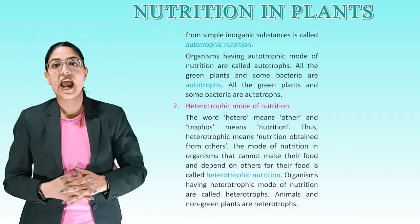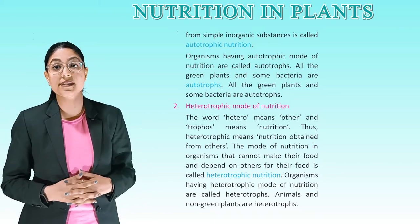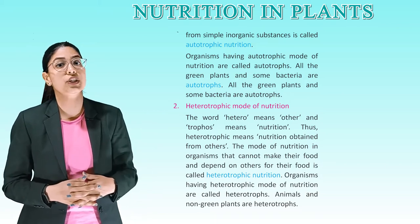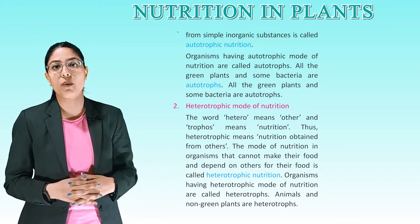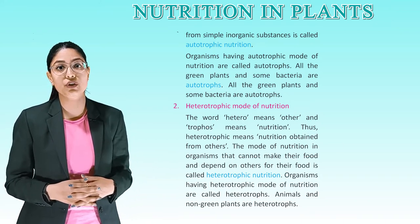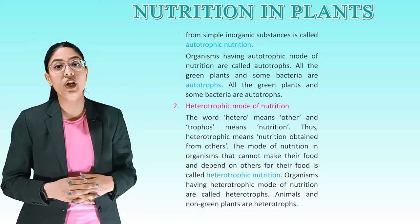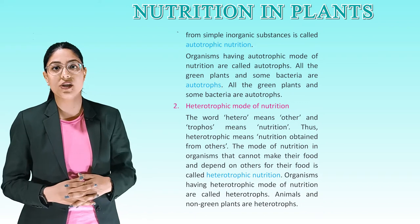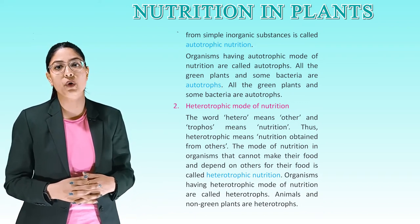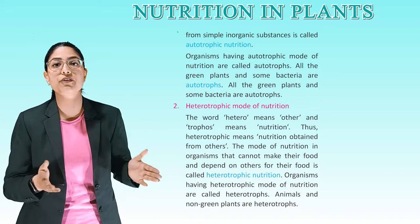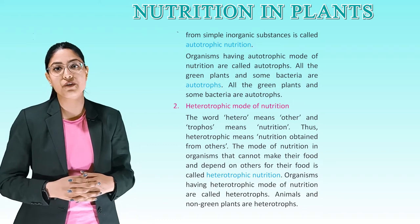The second mode is heterotrophic nutrition. The word 'hetero' means other and 'trophe' means nutrition. Thus, heterotrophic means nutrition obtained from others. The mode of nutrition in organisms that cannot make their own food and depend on others for their food is called heterotrophic nutrition. Organisms having heterotrophic mode of nutrition are called heterotrophs. Animals and non-green plants are heterotrophs.